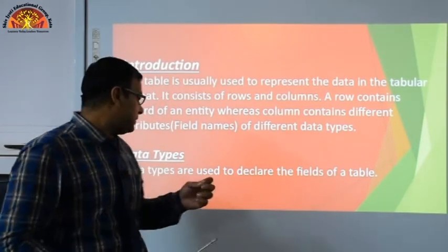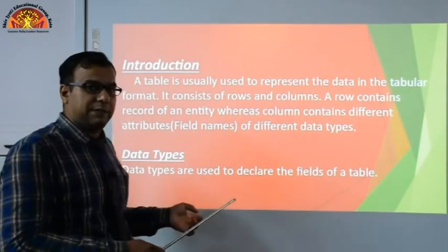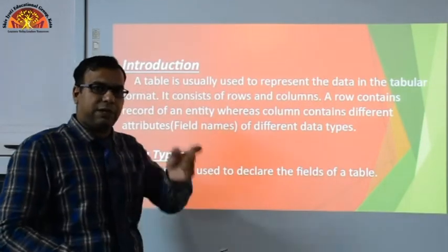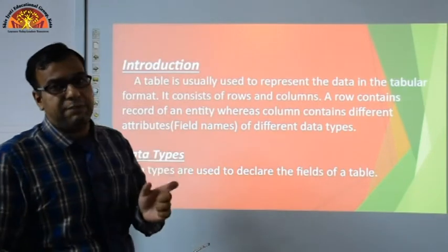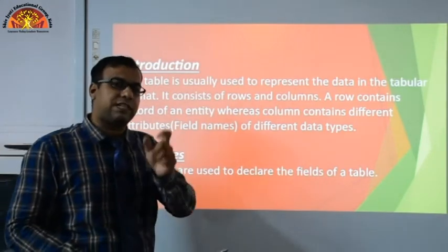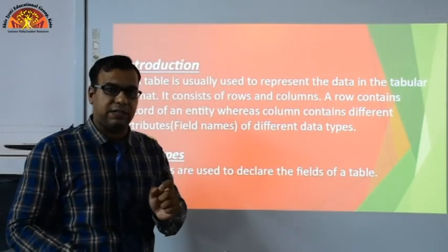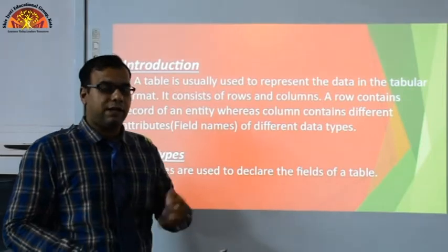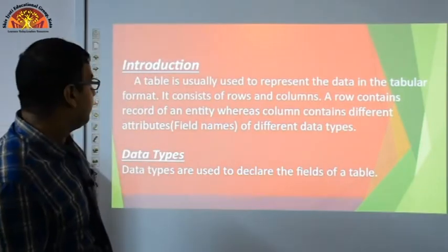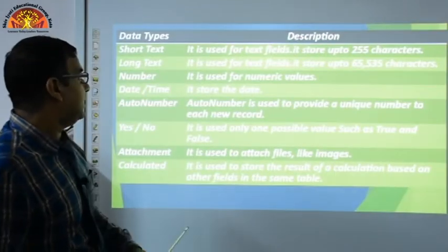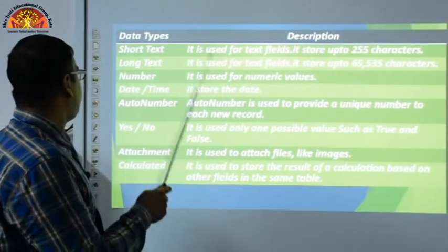So we specify the data type of a column to indicate what type of data will be stored — whether it is integer type, character type, or another type. Now let's look at the different data types and their descriptions.